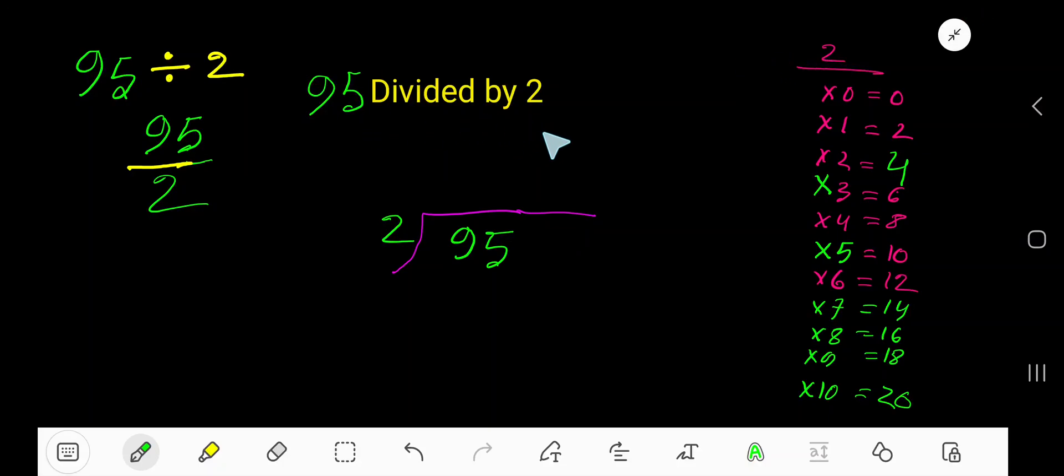95 divided by 2. Since 2 is a divisor, we need the multiplication table of 2. 2 times 0 is 0, 2 times 1 is 2, 2 times 2 is 4, 2 times 3 is 6, 2 times 4 is 8, 2 times 5 is 10.